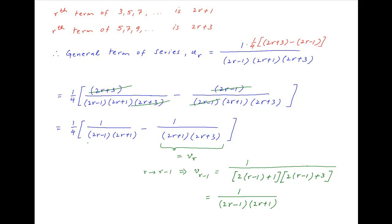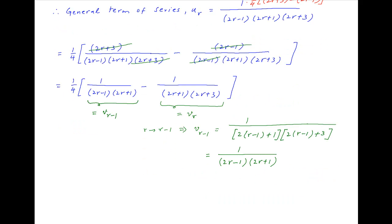Notice that the expression 1/((2r+1)(2r+3)) is equal to the first term inside the brackets in the expression for ur obtained above. Therefore, defining vr as 1/((2r+1)(2r+3)), the general term ur of the given series can be expressed as (1/4) times (vr−1 minus vr).